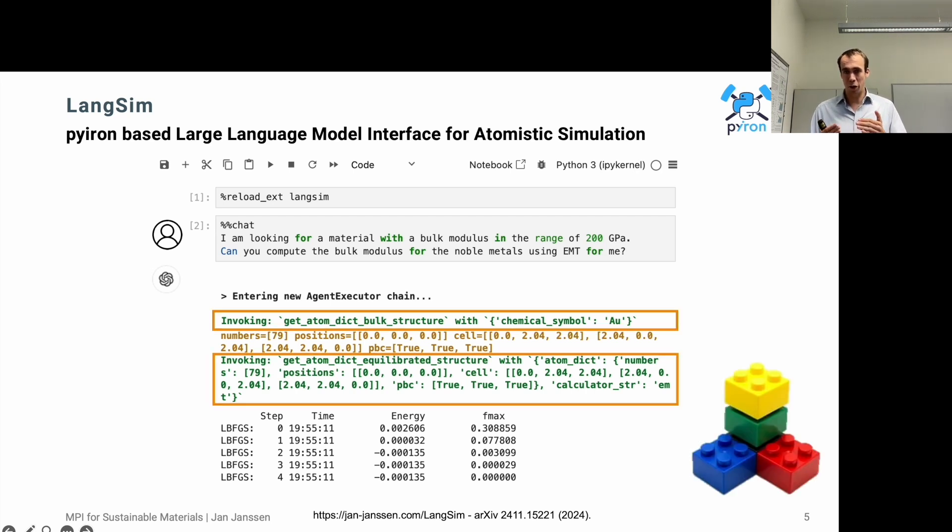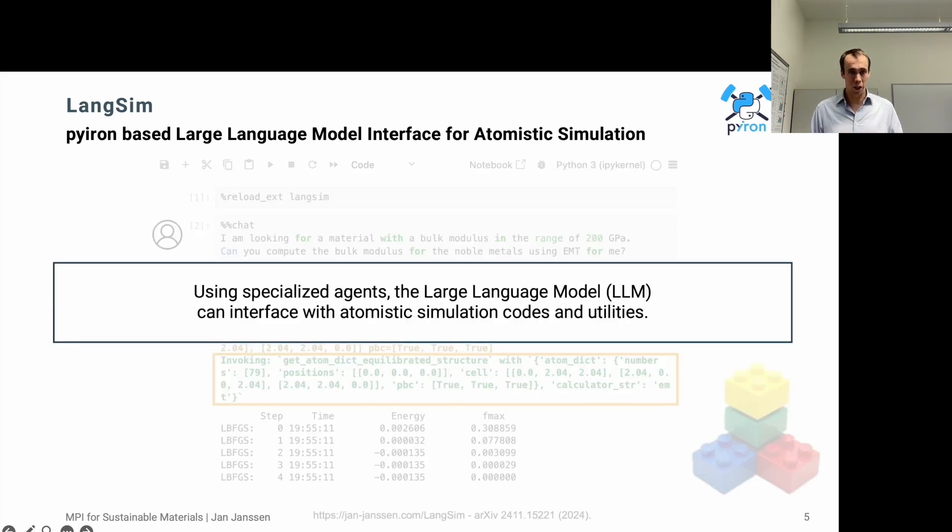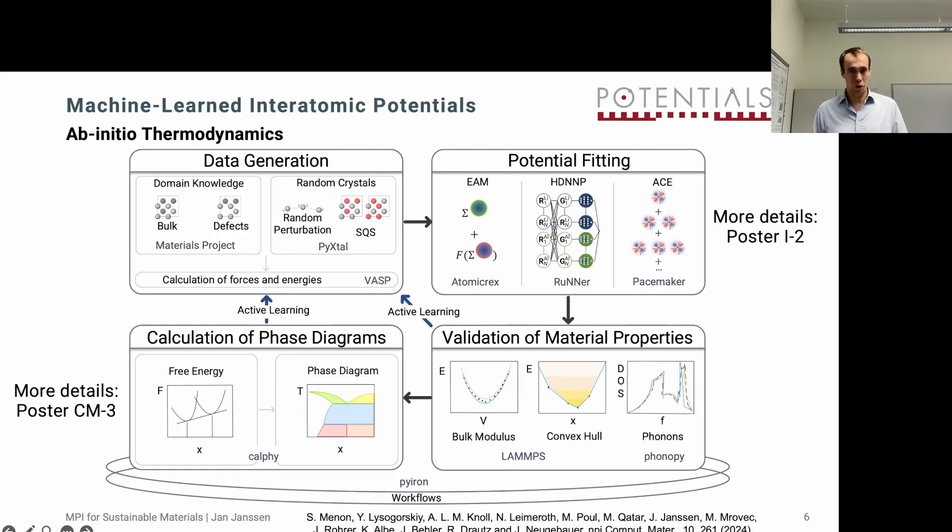We can think about this like building with Lego blocks. It puts one of the building blocks on top of each other. These building blocks, each of them, is really developed by a scientific expert. And the large language model is really just composing them together. With this specialized agent, the large language model is then able to interface with the atomistic simulation codes and the corresponding utilities. And then we can go far beyond just calculating the bulk modulus.